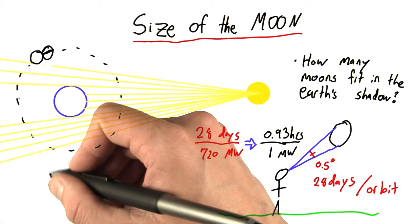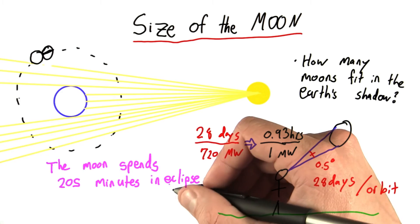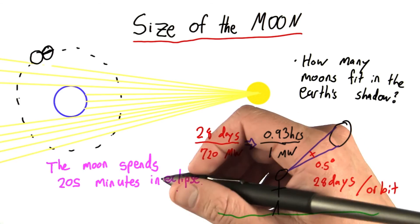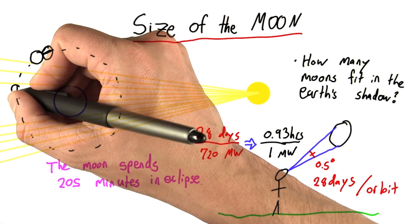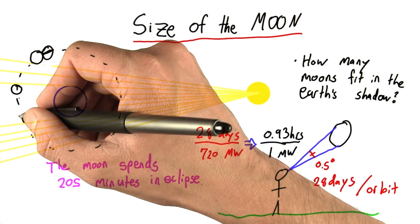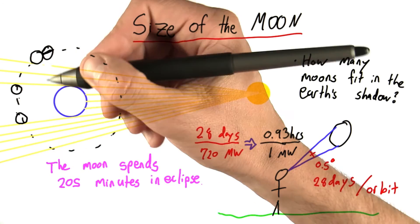The observed fact is the following. The moon spends 205 minutes in eclipse. And what do I mean for the moon to be in eclipse? Well, we start the eclipse timer when the moon is completely in the Earth's shadow, and end it just as it's leaving the Earth's shadow.